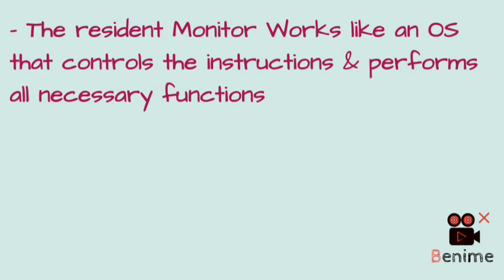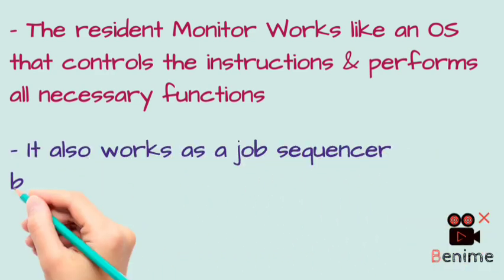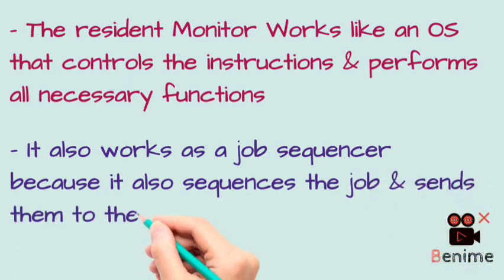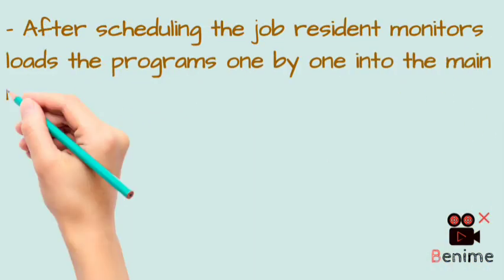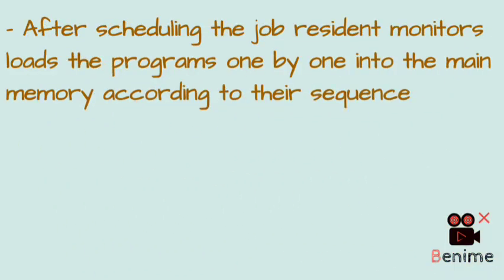In bare machines, instructions are executed directly in logic hardware without the intervention of the operating system. A job sequencer also works here — it takes the job sequence, sends it to the process and to a number of services so that production costs reduce. Scheduling is also done: after a job starts, the resident monitor loads programs into main memory according to their sequence.